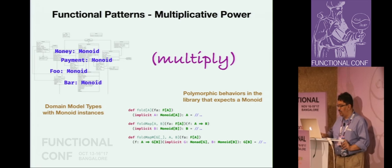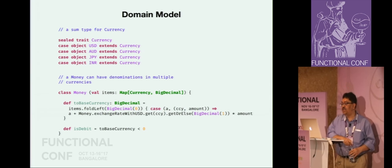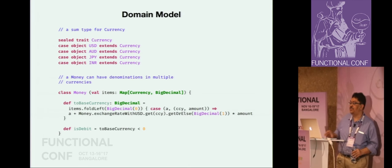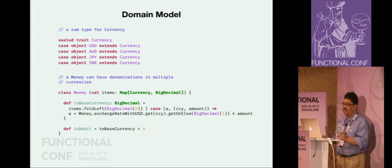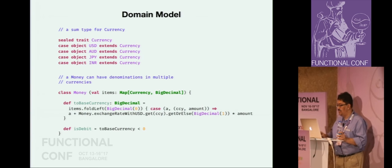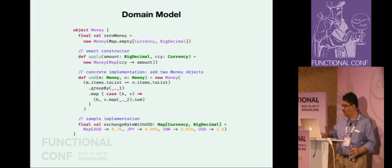Now let us look at some concrete code from real life examples. We will see how to apply some of the functional patterns in order to raise the abstraction level. This is a definition of a class called Money which is a frequently used data structure in many financial applications. This money abstraction is defined in terms of a map from currency to BigDecimal. For example, one unit of money I have in the bank could consist of 10 US dollars and 1000 Indian rupees - that can be modeled using this map-based data structure.